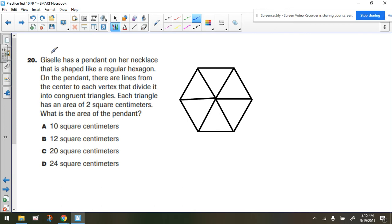Hey everybody! We're looking at number 20. Giselle has a pendant on her necklace that is shaped like a regular hexagon, and I want to remind everybody that a hexagon means it's a six-sided figure, and if it's a regular hexagon, that would imply that all the sides are the same length and all the angles are the same.